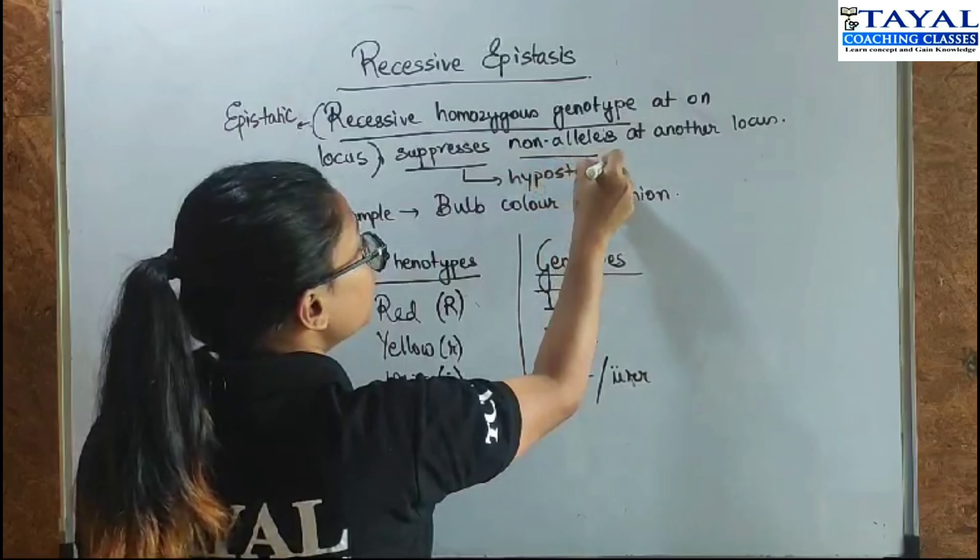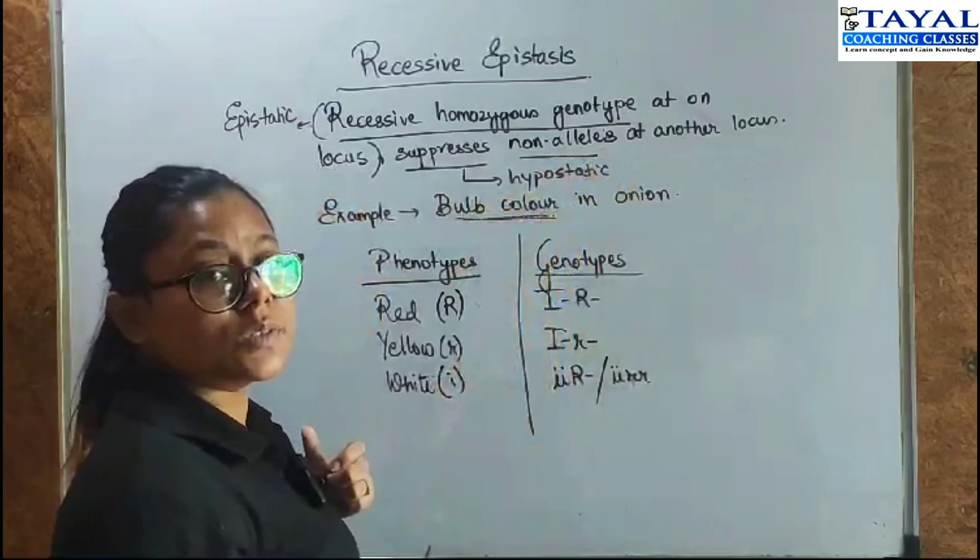So a very good example would be the bulb colour in onion, Allium cepa.